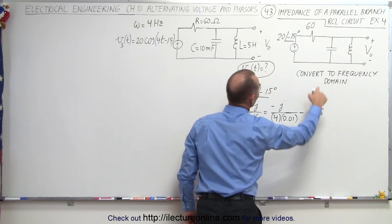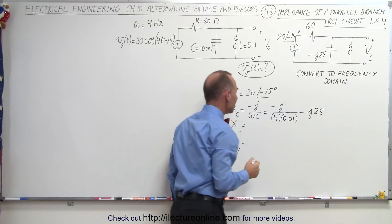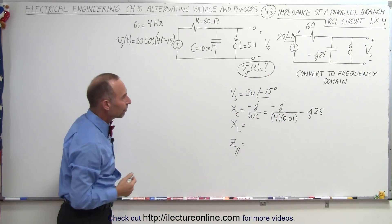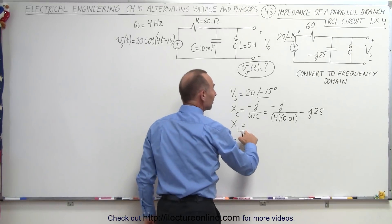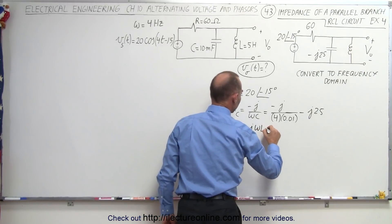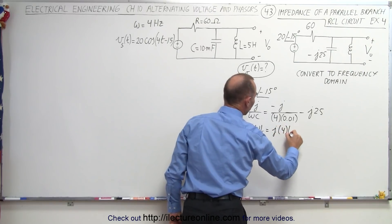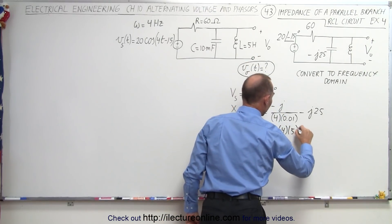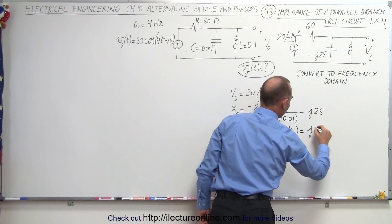So minus j25 is the capacitive reactance of that particular capacitor. Now we need to do the same for the inductor. That gives us j times omega L, which is j times 4, and L in this case is 5 henries, which equals positive j20.